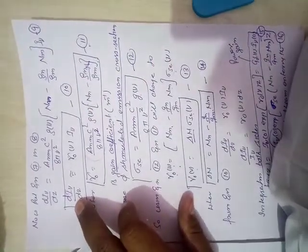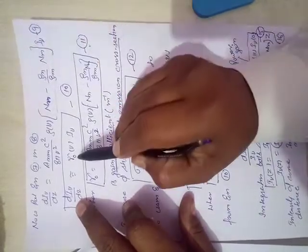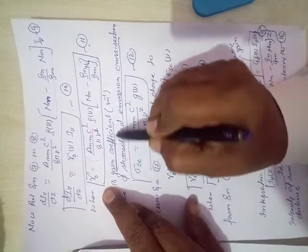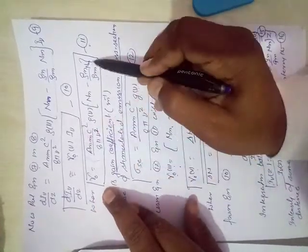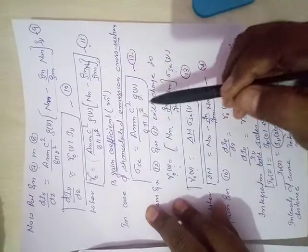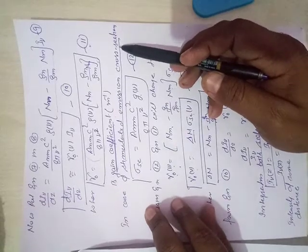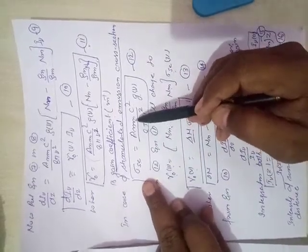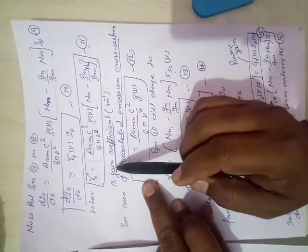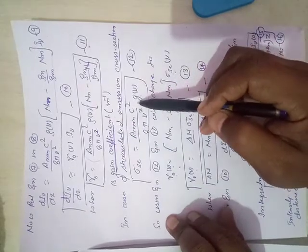After getting equation number 9, the term used in this bracket is represented by gamma naught, where gamma naught is the gain coefficient, and we will get equation number 11. In the case of stimulated emission of radiation, the area of cross-section is given by A_nm c squared upon... this term we have called the gain factor.